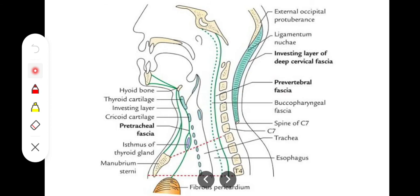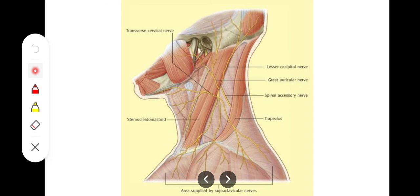The investing layer encloses the hyoid bone and splits to form the suprasternal space. Posteriorly, the ligamentum nuchae extends down to the spinous process of the 7th cervical vertebra. In terms of muscles, the investing layer splits and encloses two muscles: anteriorly it encloses the sternocleidomastoid muscle, and posteriorly it encloses the trapezius muscle.